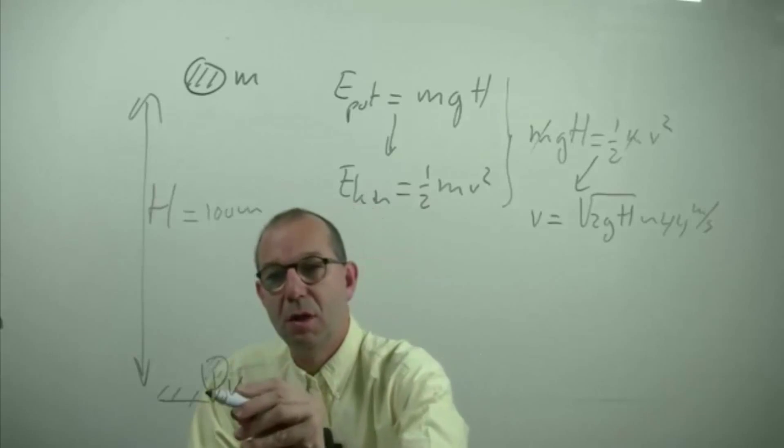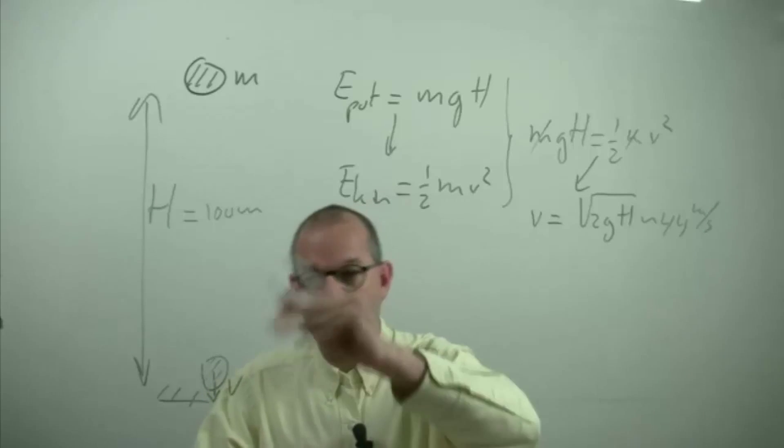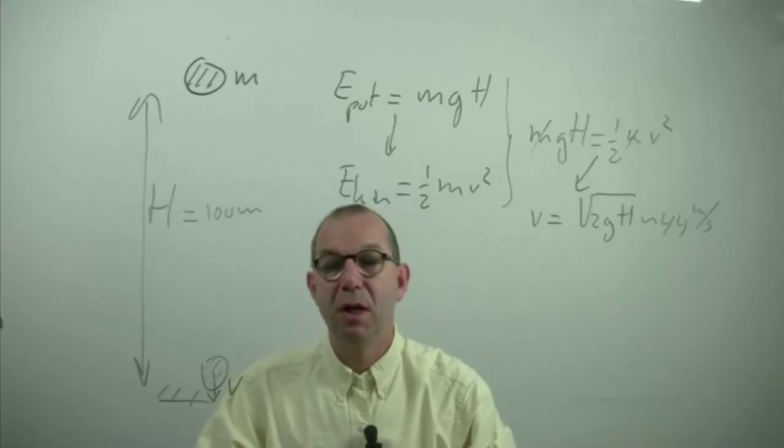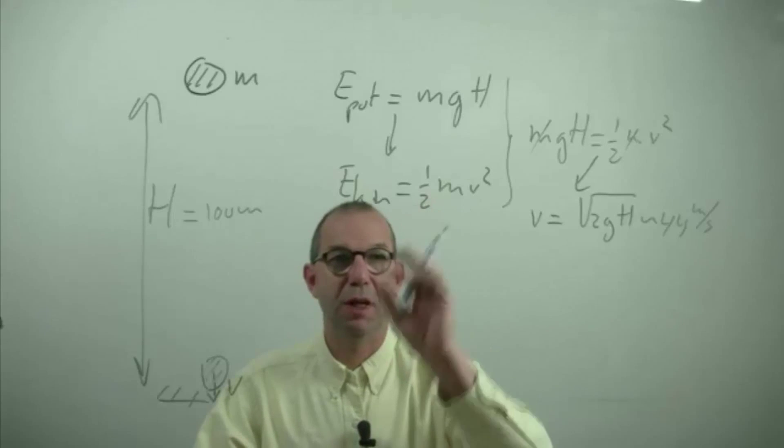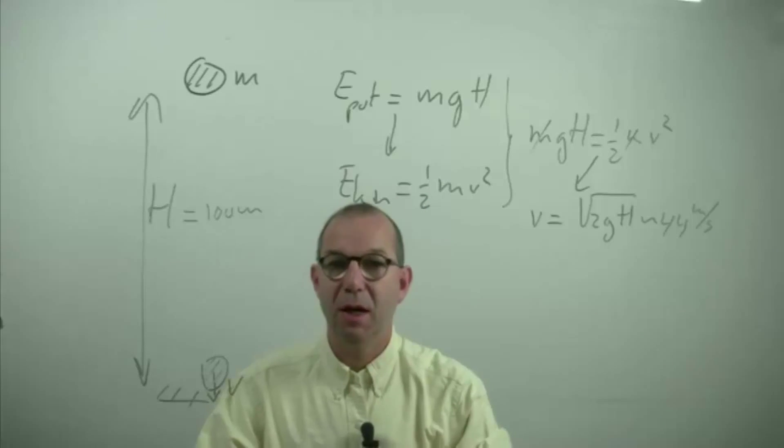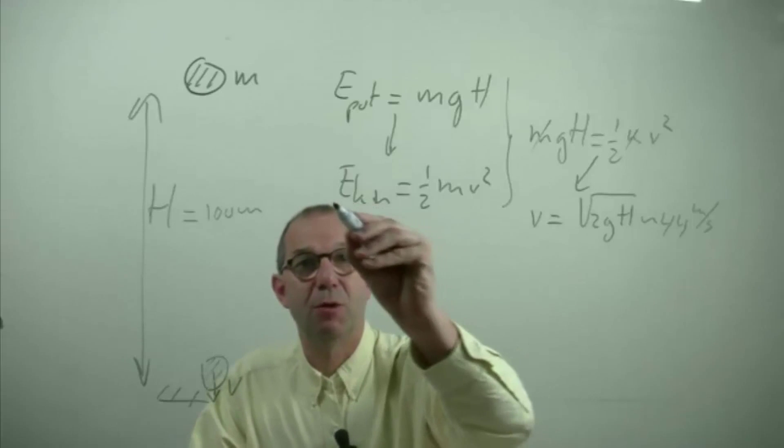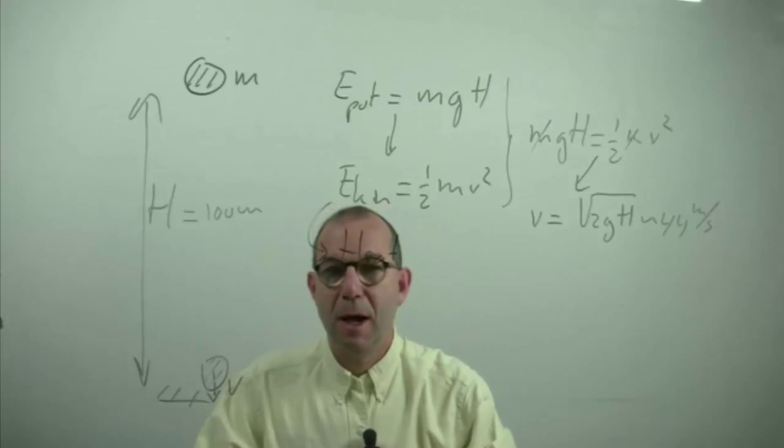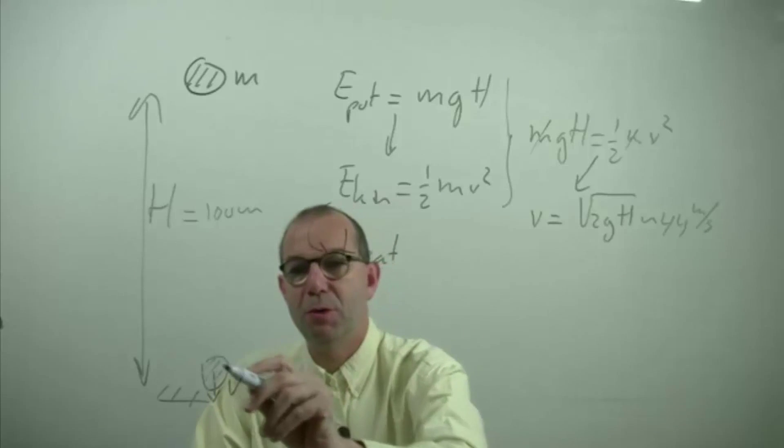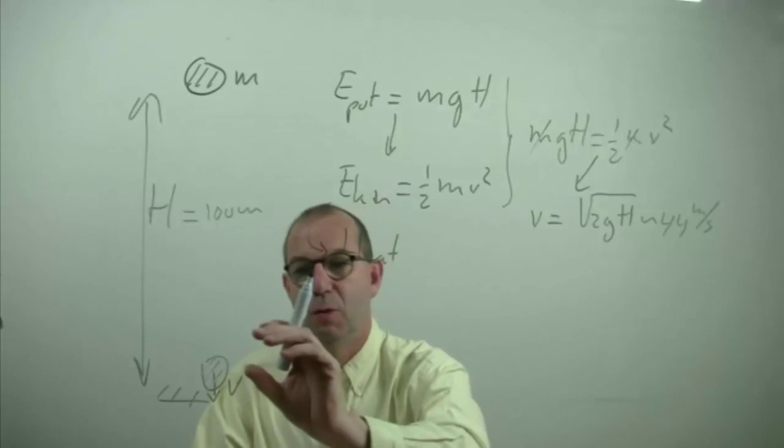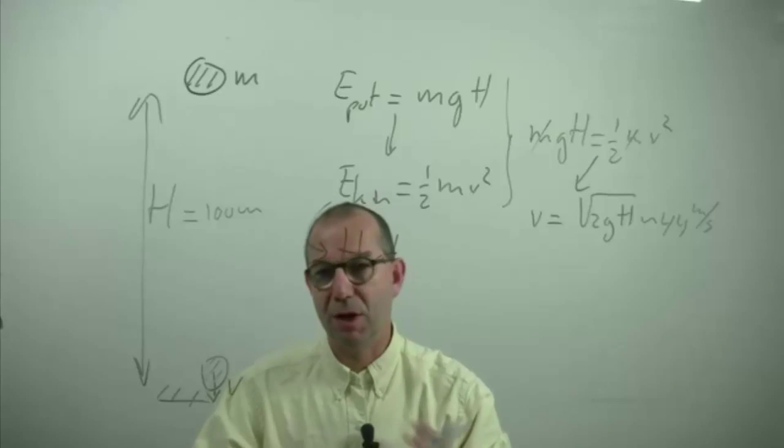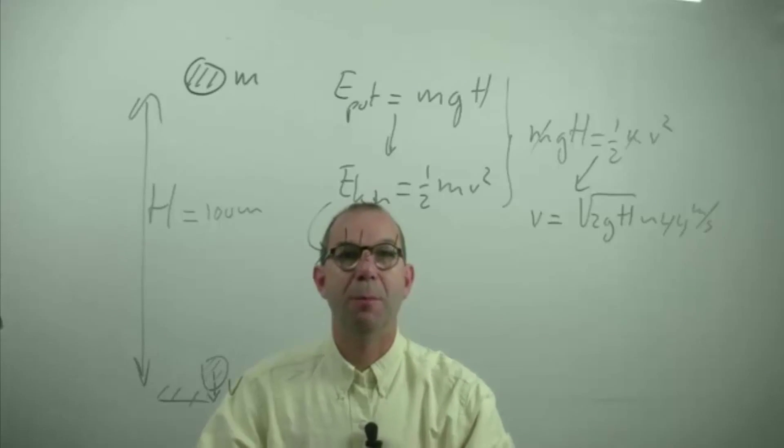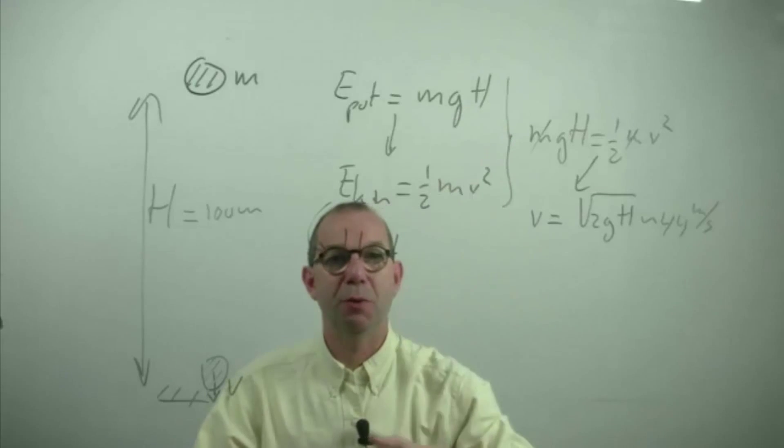Once our mass reaches the ground it will bounce up and down a few times and then lay still. And the question we could ask ourselves, what happens to the kinetic energy that it came in with and the answer is it turns up into heat. So eventually that becomes heat. We're going to assume that all this heat will be inside our mass, that nothing is lost to the environment. Again it's a simplification but it gives us an idea, a feeling of what happens to this kinetic energy that came out of potential energy.